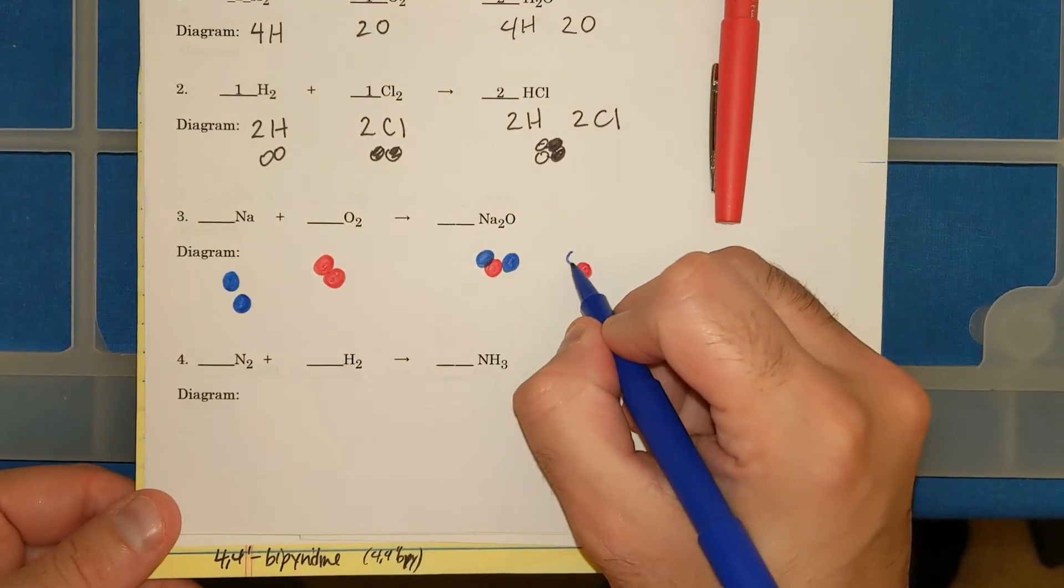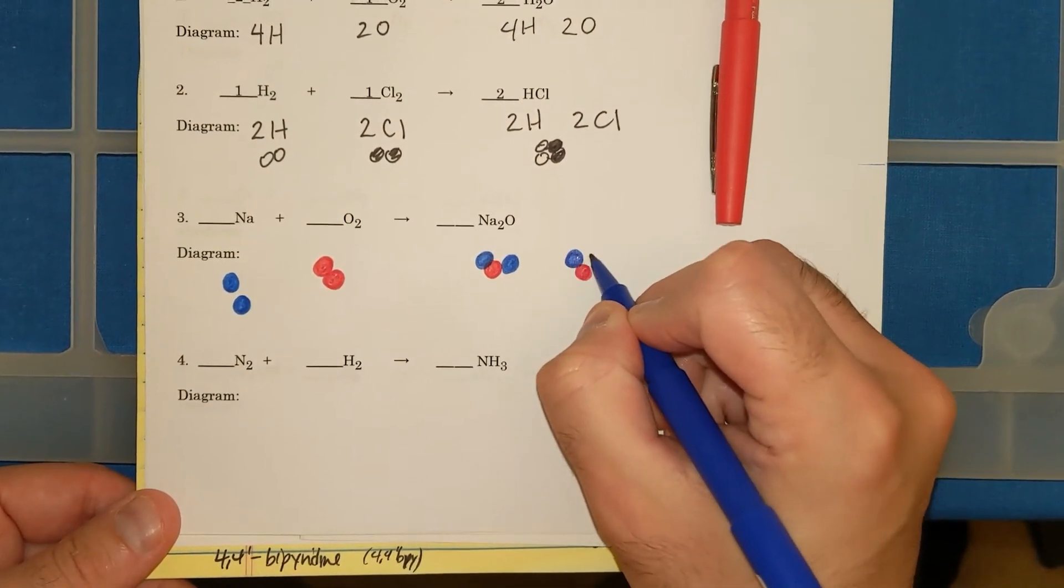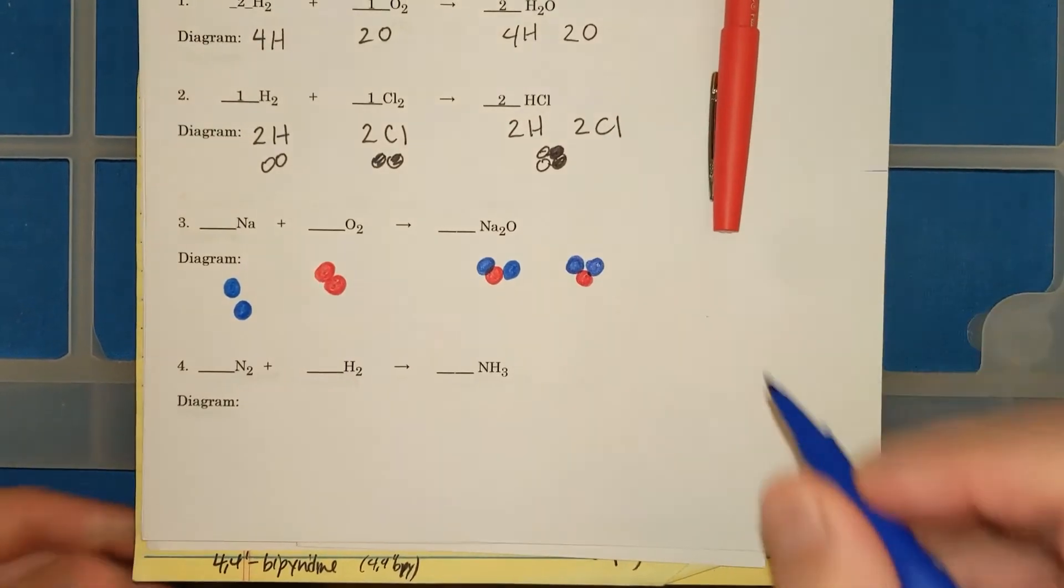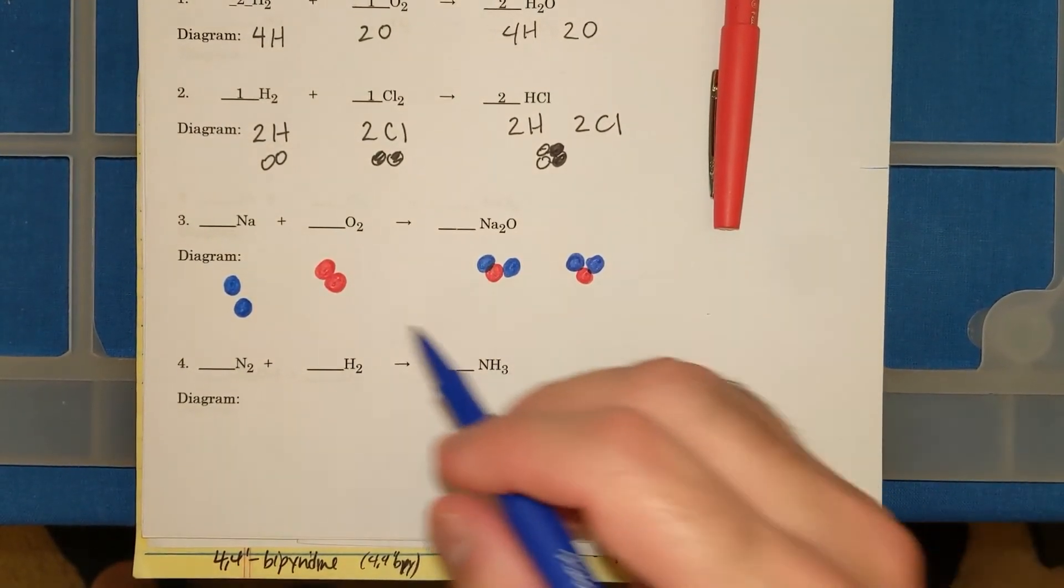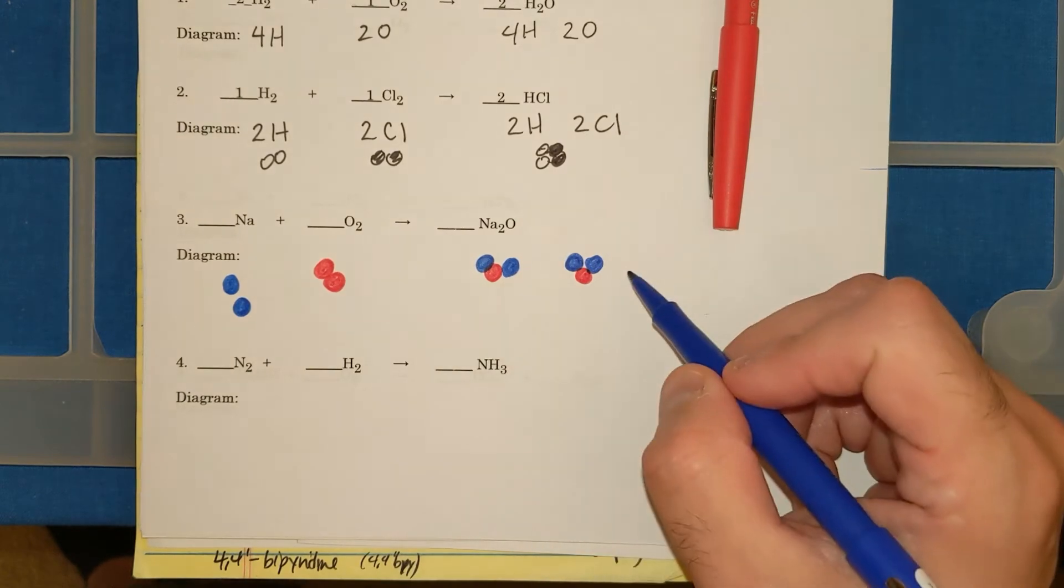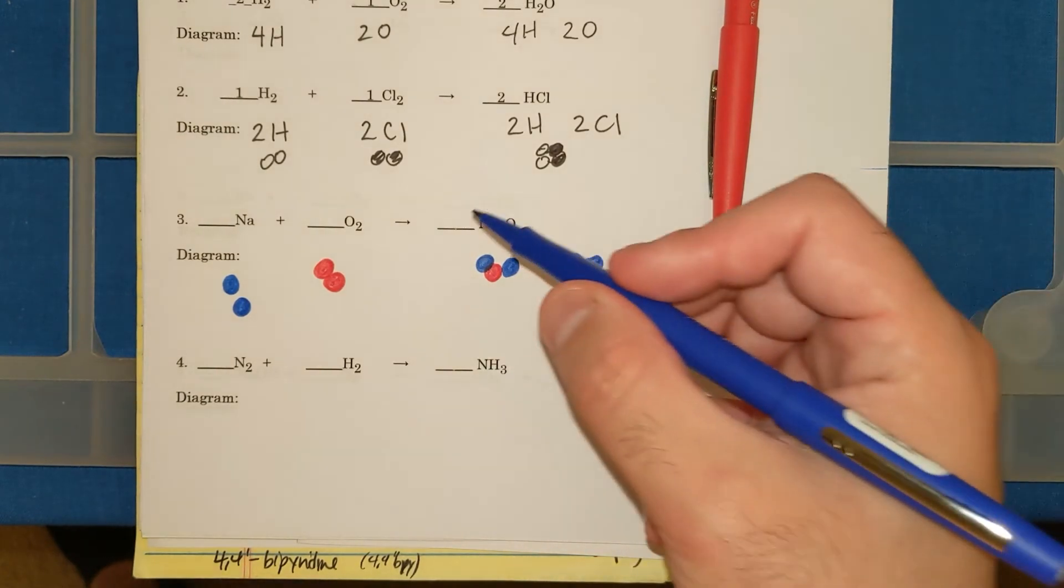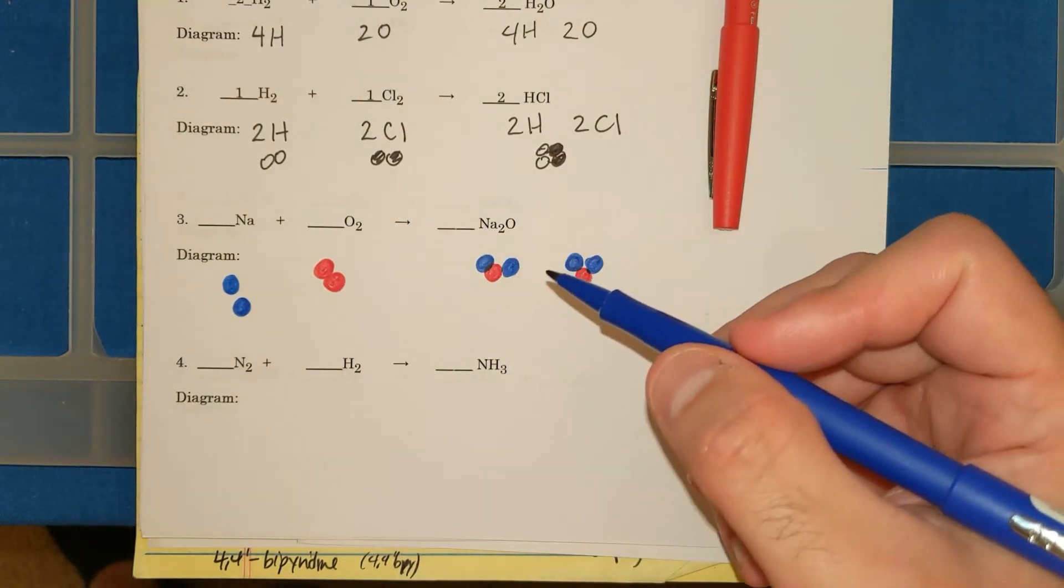And so now, my O's are balanced. I have 2 O's, 2 O's. But now my Na's are not balanced. I don't have the same number.